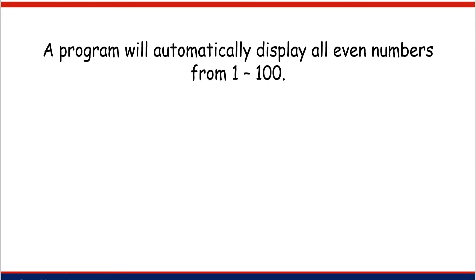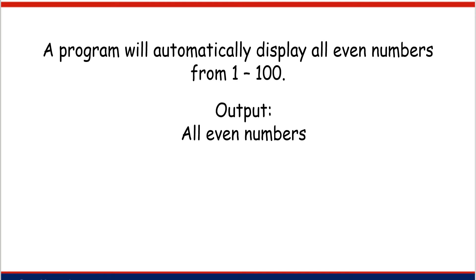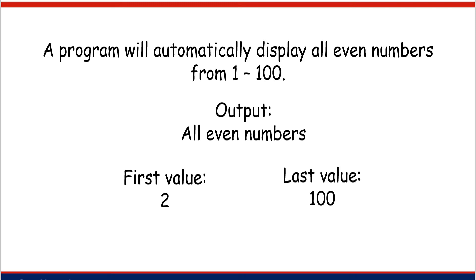For example, a program will automatically display all even numbers from 1 to 100. Let's analyze the problem. The outputs are all even numbers. The first value is number 2 because 1 is an odd number, and the last value is 100.